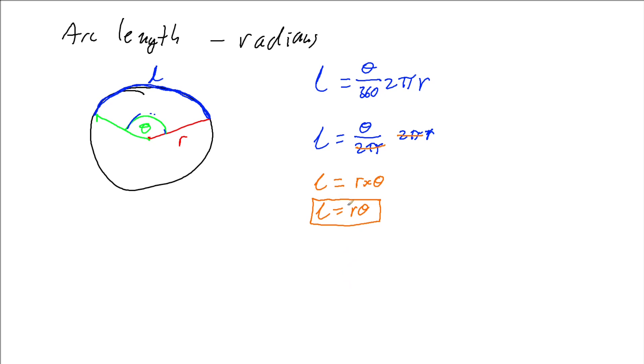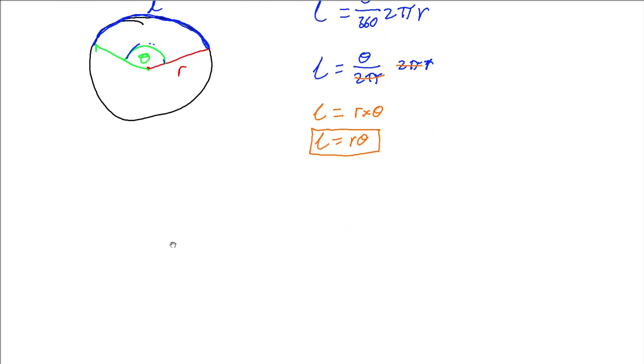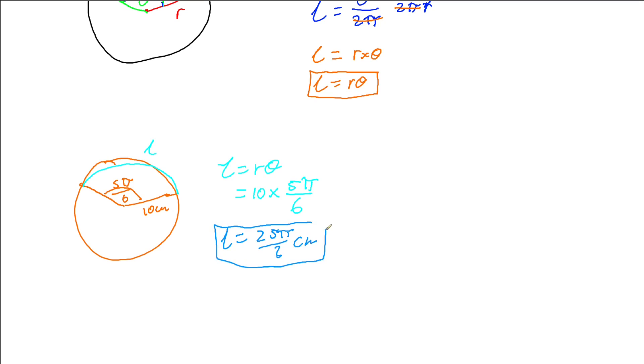Let's use that in an example. What if I have a circle with a radius of 10 centimeters and we rotate through an arc of 5π over 6? How long is the arc length? All I have to do is multiply the radius times the angle: 10 centimeters times 5π/6, which gives us an arc length of 25π/3 centimeters.